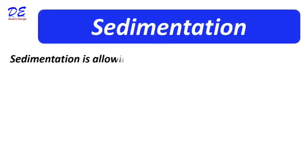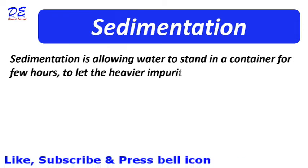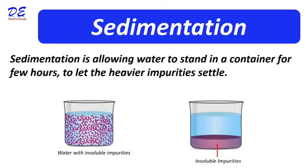Sedimentation is allowing water to stand in a container for a few hours to let the heavier impurities settle. If we put some water with insoluble impurities in it and leave the container for a few hours, the heavier impurities settle on the bottom part of the container and clean water remains on top. In this way, we can clean the water.